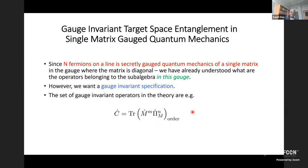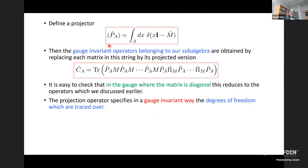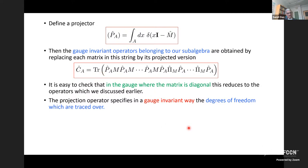The set of gauge-invariant operators in the single-matrix formulation are products of the matrix and its canonical conjugate with some ordering. We define a projector — a matrix-valued operator given much like the projector in terms of eigenvalues — and the gauge-invariant sub-algebra is obtained by inserting the projector between the matrices. In the gauge where the matrix is diagonal this just becomes the projector used in the N-fermion problem. However, because the construction is completely gauge invariant — we project first and then take the trace — this construction can be carried over to multiple matrices.